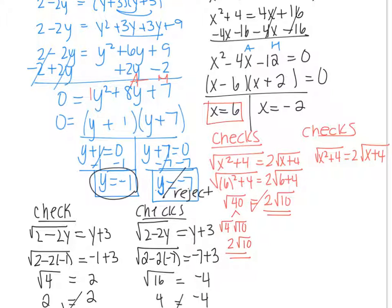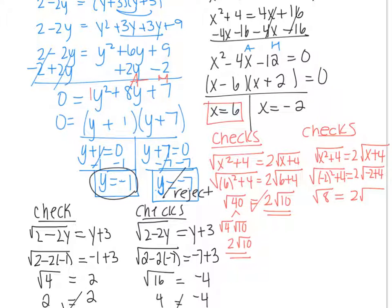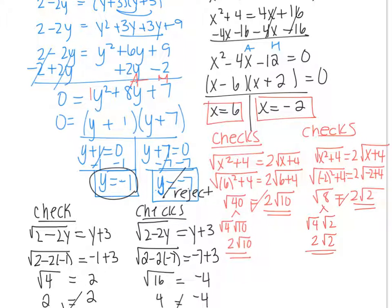Now let's try x equals negative 2. Negative 2 squared plus 4 is 4 plus 4 which is 8, so the square root of 8. And 2 times the radical of negative 2 plus 4 is 2 radical 2. If you break up radical 8 into 4 times 2, that's 2 radical 2 — which is equal. So that works too. Both are solutions, and you could write the solution set as negative 2 comma 6.